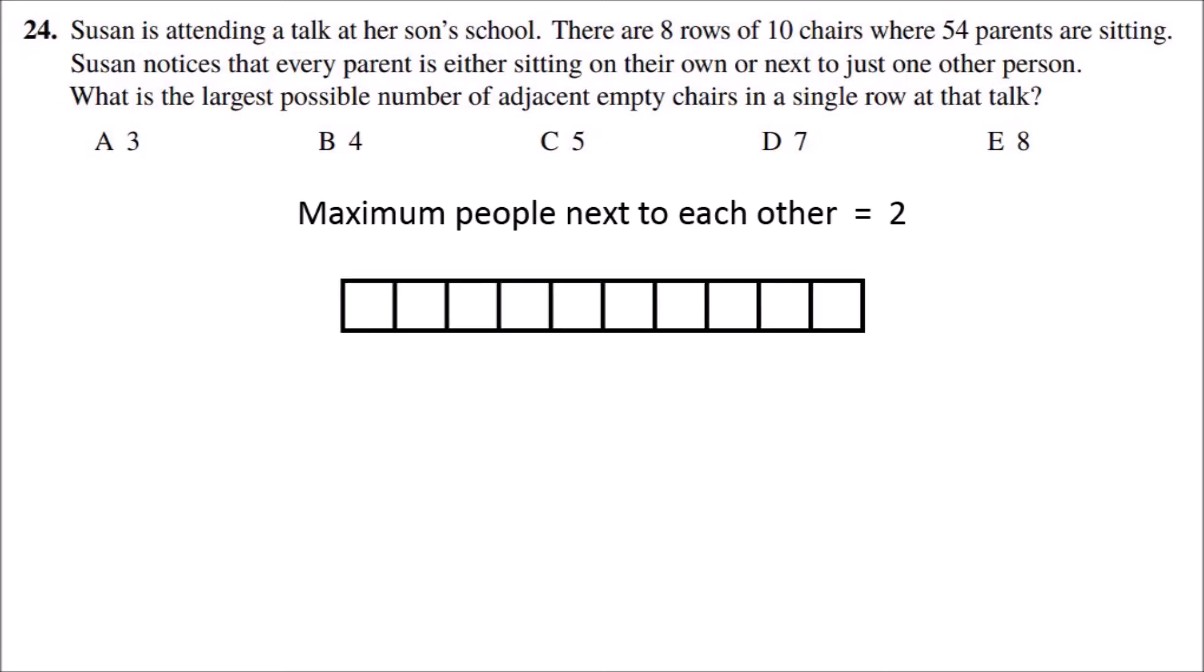Now if we try and fill up a row of chairs as much as possible by placing two people followed by an empty chair, then that leaves a person on their own sitting at the end. So the maximum number of people in each row is seven.